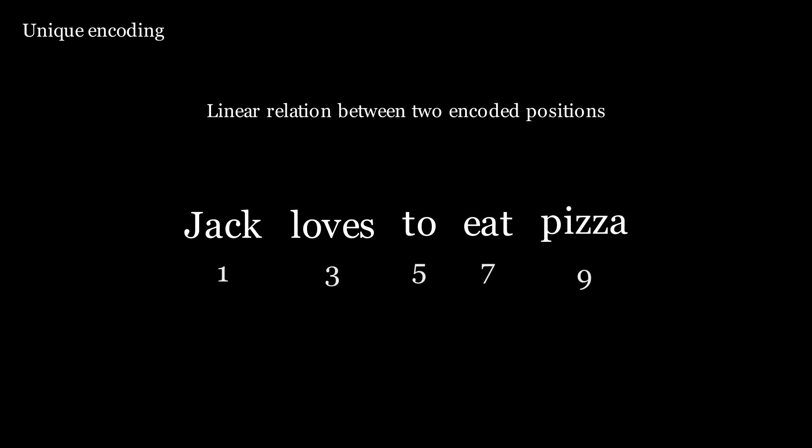Second, there should be a linear relation between two encoded positions. If we have a look at the PE of these words, I can predict the position of pizza just by looking at two, because for each next word, two is being added to the position.